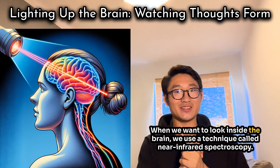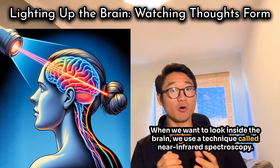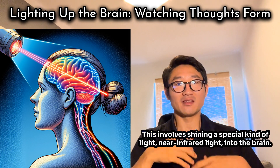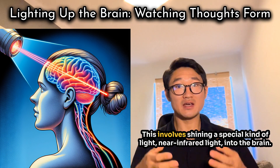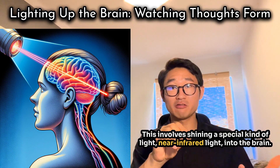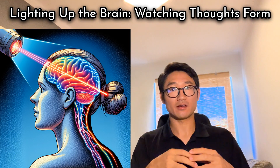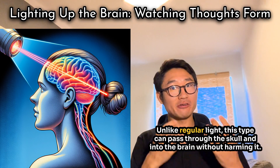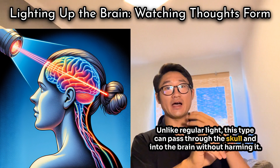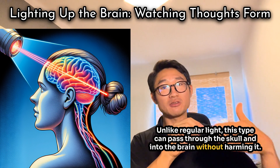When we want to look inside the brain, we use a technique called near-infrared spectroscopy. This involves shining a special kind of light — near-infrared light — into the brain. Unlike regular light, this type can pass through the skull and into the brain without harming it.